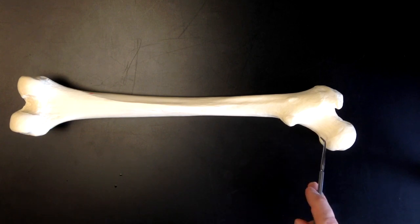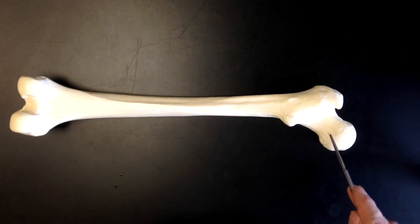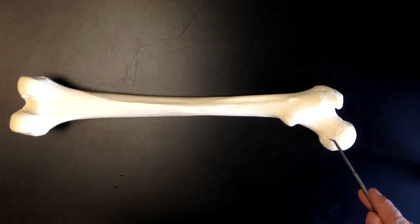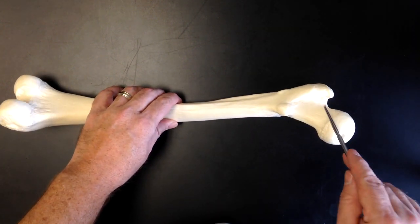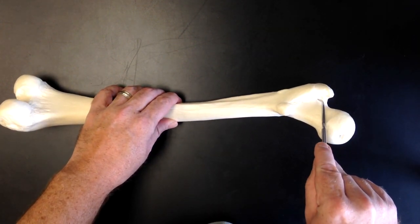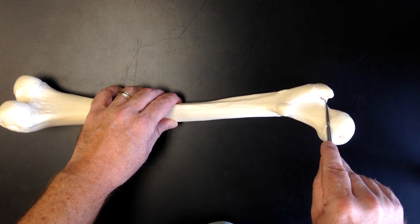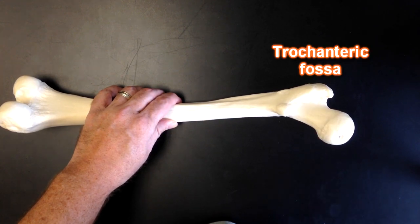I want to go back up here to the proximal end of the femur and show you this indentation or this pit in here. That's called the trochanteric fossa.